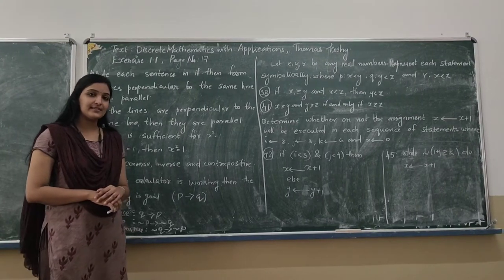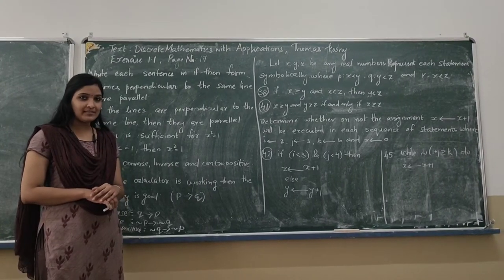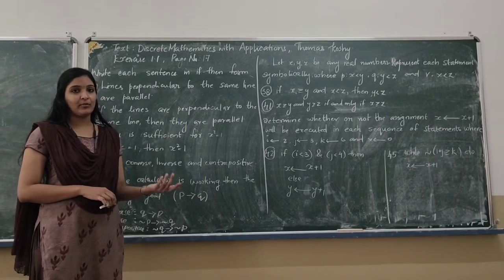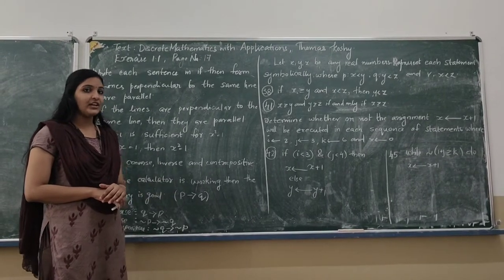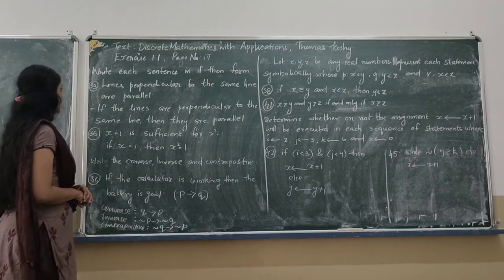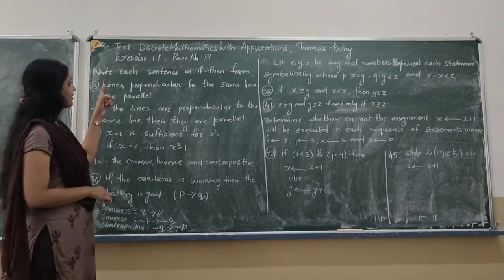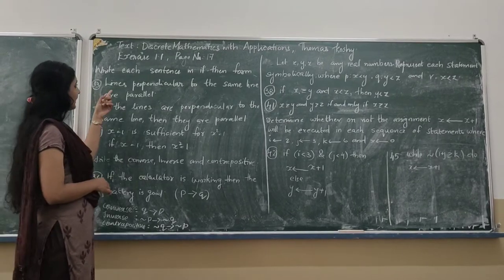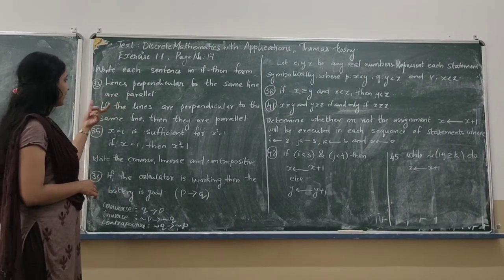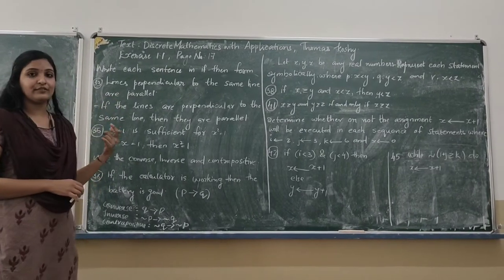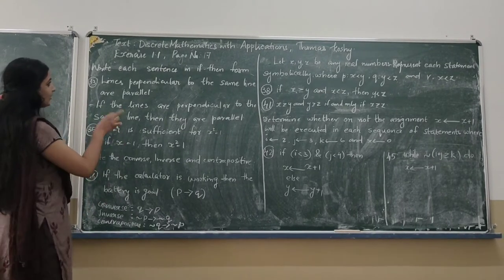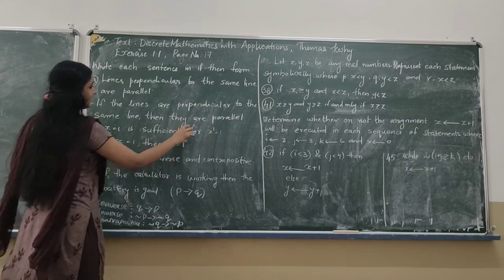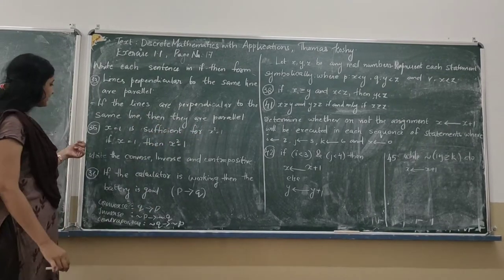So far we have discussed some of the problems in exercise 1.1. Now we continue solving some other problems from the rest of the exercise. We start with question number 33: write each sentence in the if-then form. The question is: lines perpendicular to the same line are parallel. We convert it as: if the lines are perpendicular to the same line, then they are parallel.